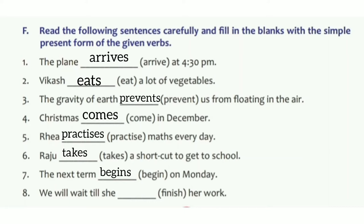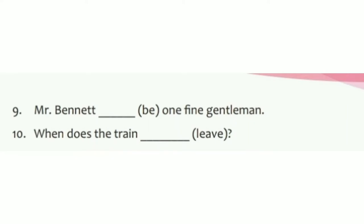Number six: 'Raju ___ a shortcut to get to school' — takes. Number seven: 'The next term ___ on Monday' — begins. Number eight: 'We will wait till she ___ her work' — finishes. Number nine: 'Mr. Bennett ___ one fine gentleman' — the Simple Present form of 'be' is 'is' because it is singular — Mr. Bennett is one fine gentleman. Number ten: 'When does the train ___ ?' — leave, not 'leaves', because 'does' is already there, so we just use the base verb: 'When does the train leave?'